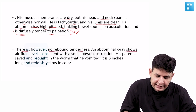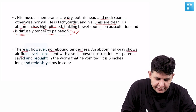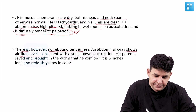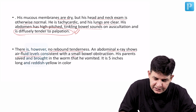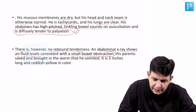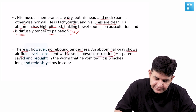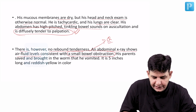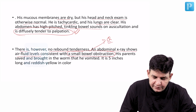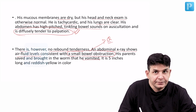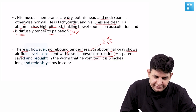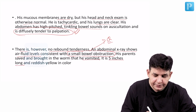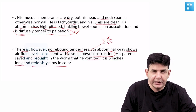Abdominal X-ray shows air-fluid levels consistent with a small bowel obstruction. His parents saved and brought in the worm that he vomited. It is 5 inches long and reddish-yellow in color.